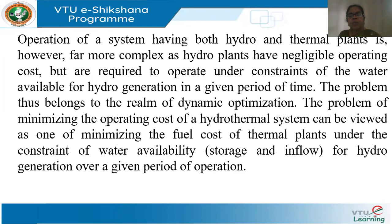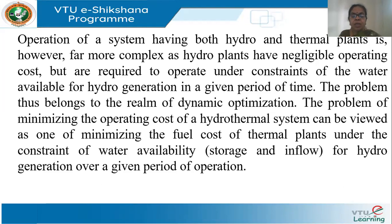Operation of a system having both hydro and thermal plants is far more complex, as hydro plants have negligible operating cost but are required to operate under constraints of the water available in a given period of time. This is a dynamic optimization problem. The problem of minimizing the operating cost of a hydrothermal system involves minimizing the fuel cost of the thermal plant under an additional constraint of water availability of the hydro plant. The objective function is still minimization of cost, with water availability as a constraint.